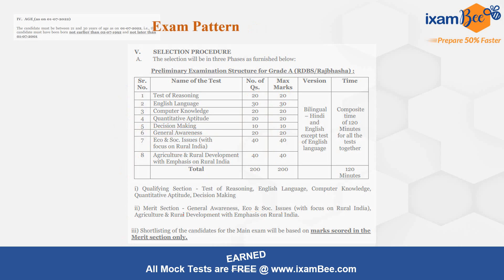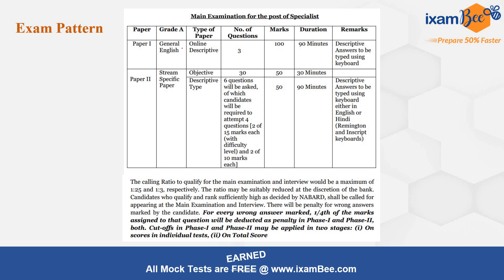Shortlisting of candidates for the main exam will be based on marks scored in the merit section only. Moving to Phase 2: there are two papers. Paper 1 is General English, which is online descriptive — you type answers using the keyboard. There are three questions worth 100 marks and the duration is 90 minutes. Paper 2 is stream-specific (IT), which has both objective and descriptive sections — 30 objective questions worth 50 marks, with some questions worth one mark and some worth two marks, to be completed in 30 minutes.